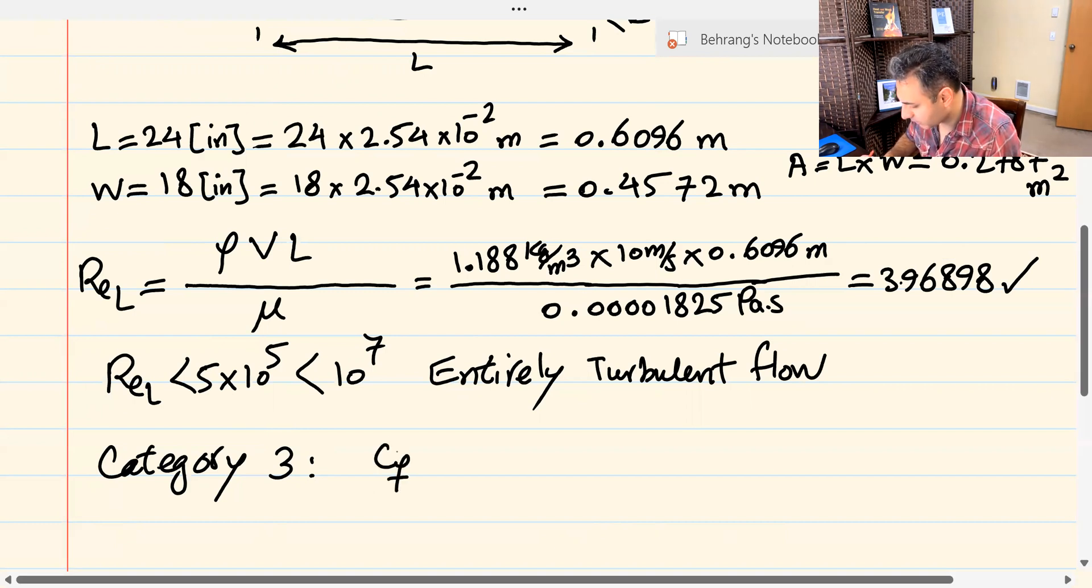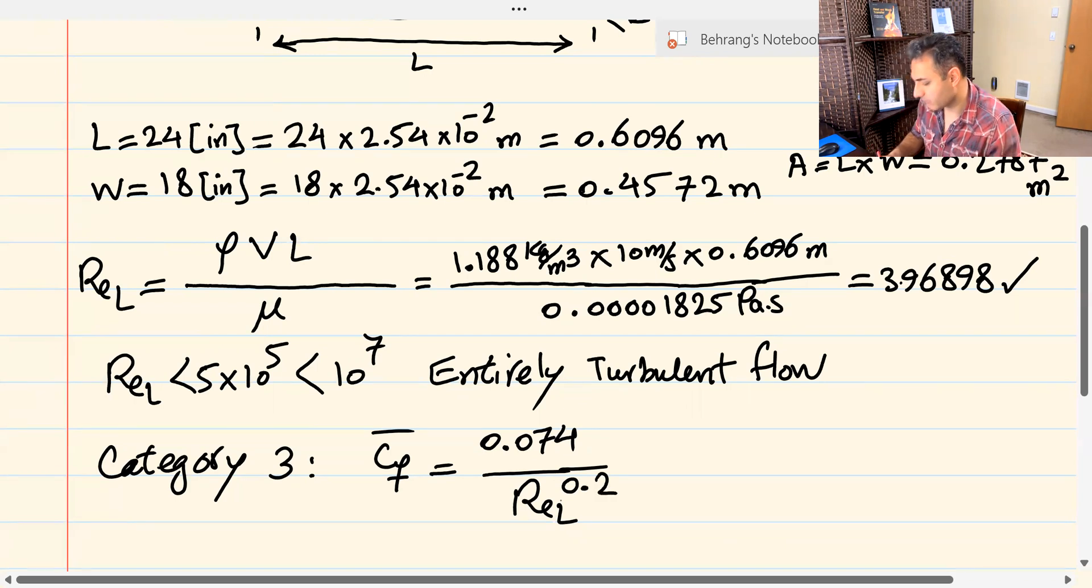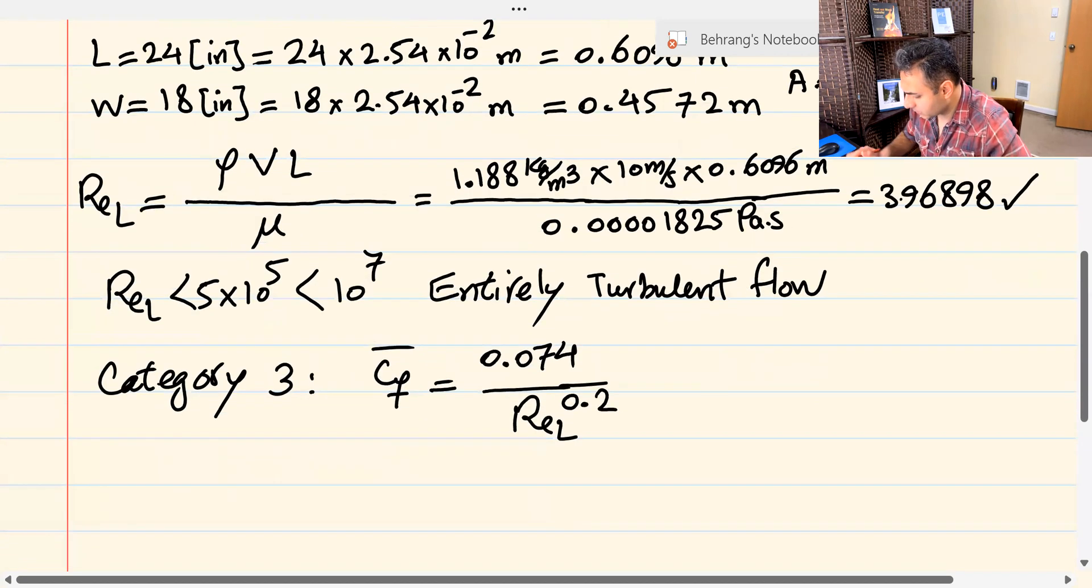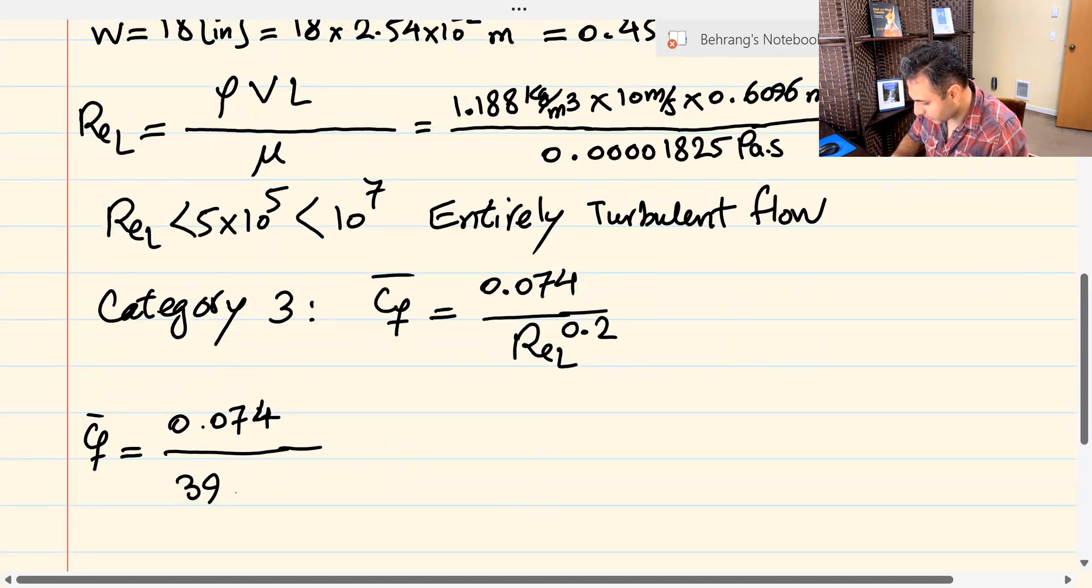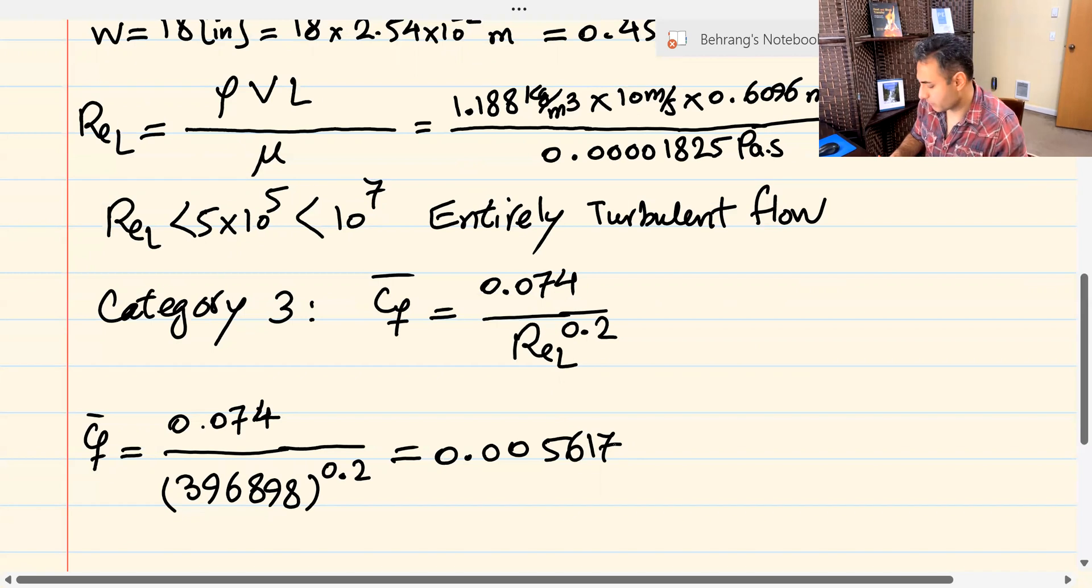So for category 3, the average friction coefficient equation that we showed. So I just calculate this and I should be just good to go after this. CF average is 0.074 over Reynolds number 396898.2, and it turns out to be 0.005617. That is going to be your friction coefficient.